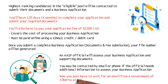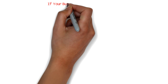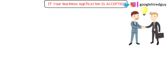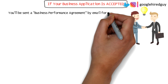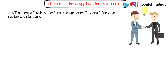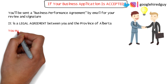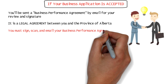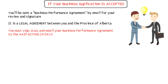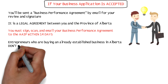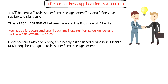Be on the lookout for an email from a Government of Alberta account at gov.ab.ca. If the AAIP deems that you've demonstrated all the Rural Entrepreneur Stream criteria, you'll be sent a Business Performance Agreement by email for your review and signature. This is a legal agreement between you and the province of Alberta. You must sign, scan, and email it back within 14 days. Entrepreneurs approved under the established businesses criteria — meaning if you're buying an already established business — are not required to sign a Business Performance Agreement.